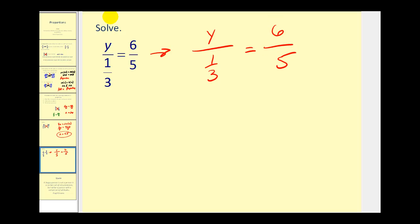Now we'll go ahead and cross-multiply. So we'd have 5 times y, or 5y, must equal one-third times 6. Well, one-third times 6, this would be 6-thirds or 2. So we have 5y equals 2.